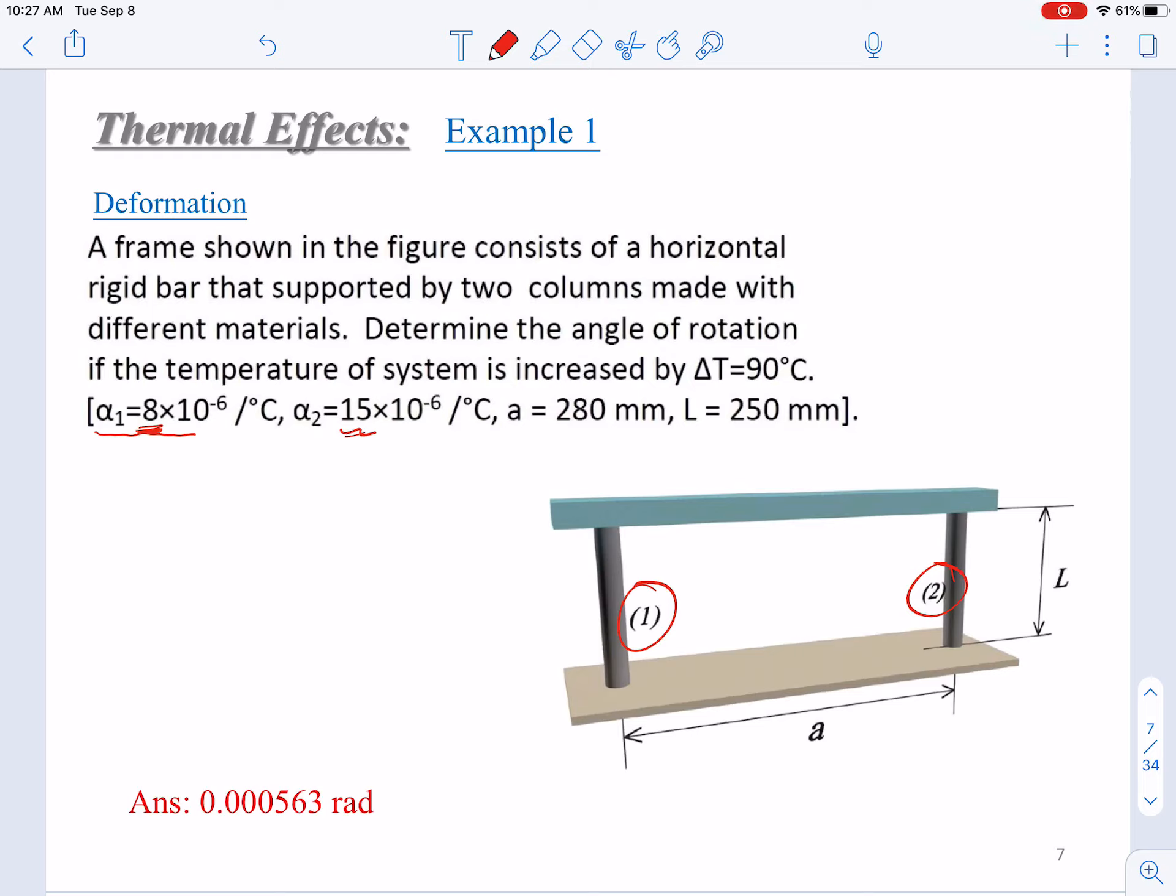Determine the angle of rotation if the temperature of the system is increased by ΔT=90°C. This positive number means the system will be heated, so these two columns will tend to be elongated.